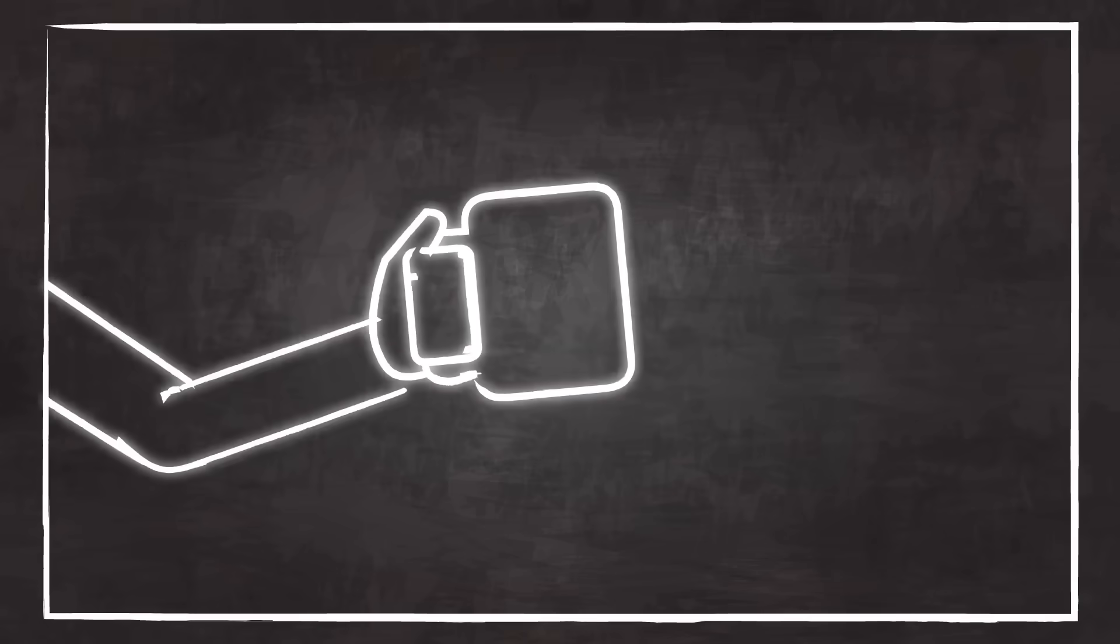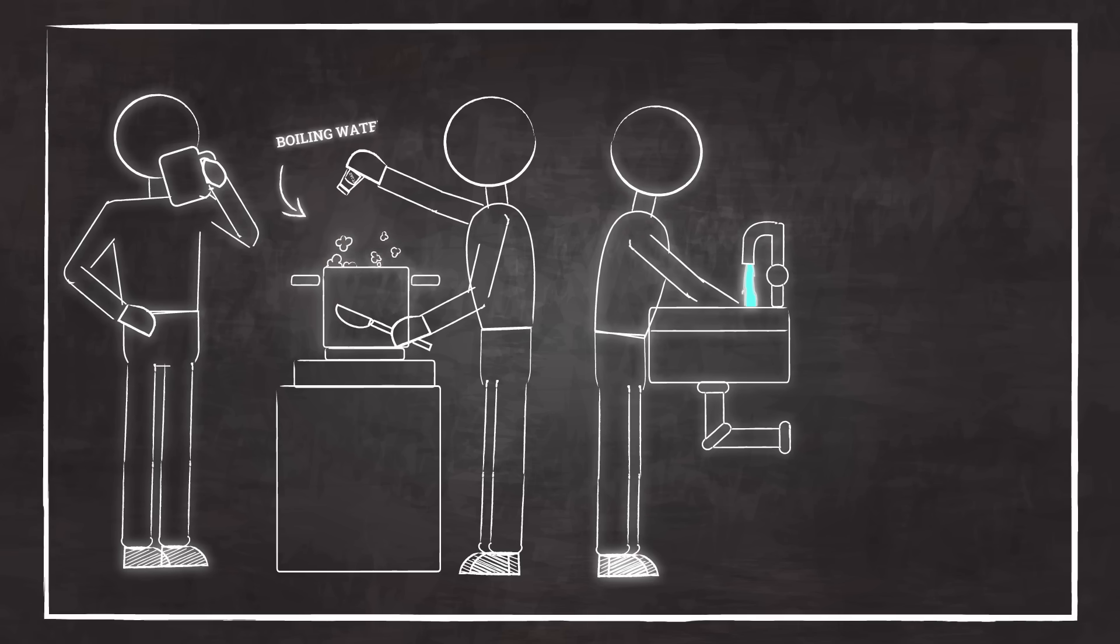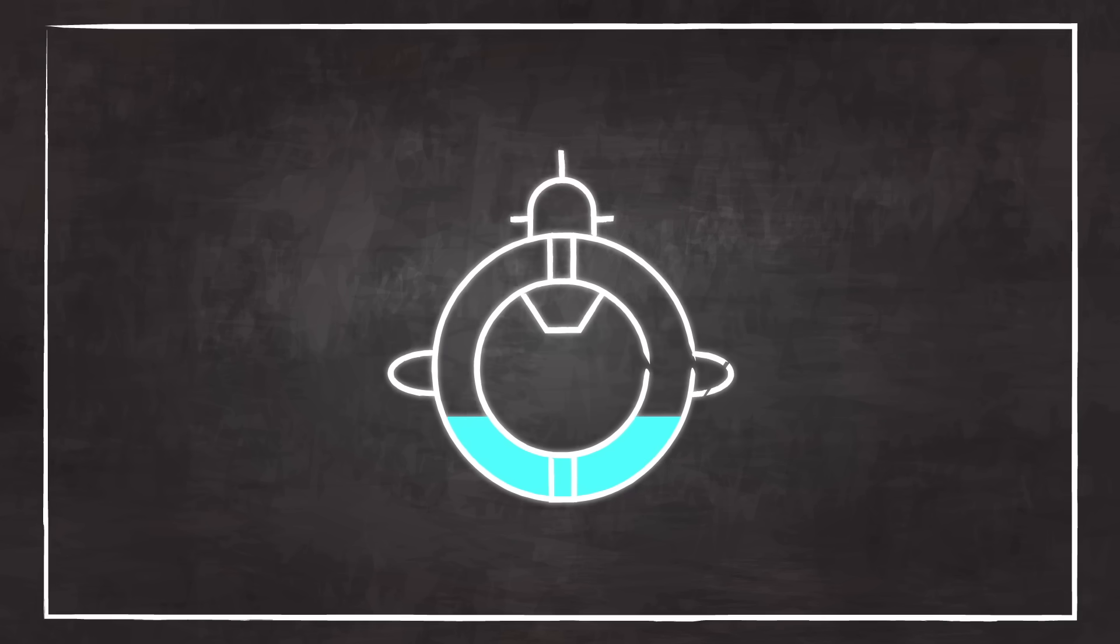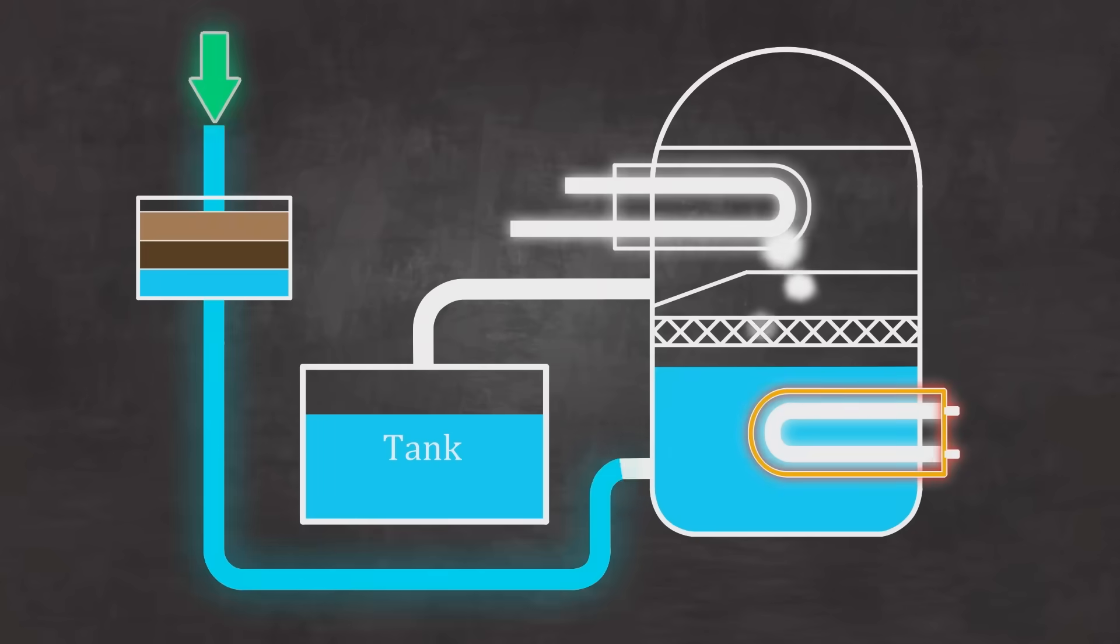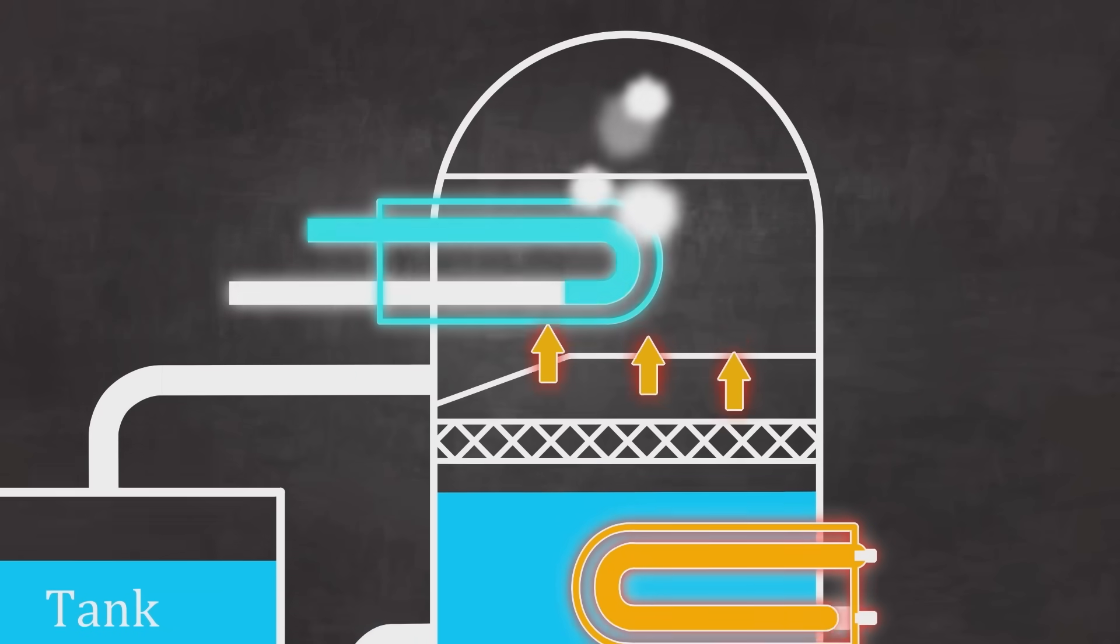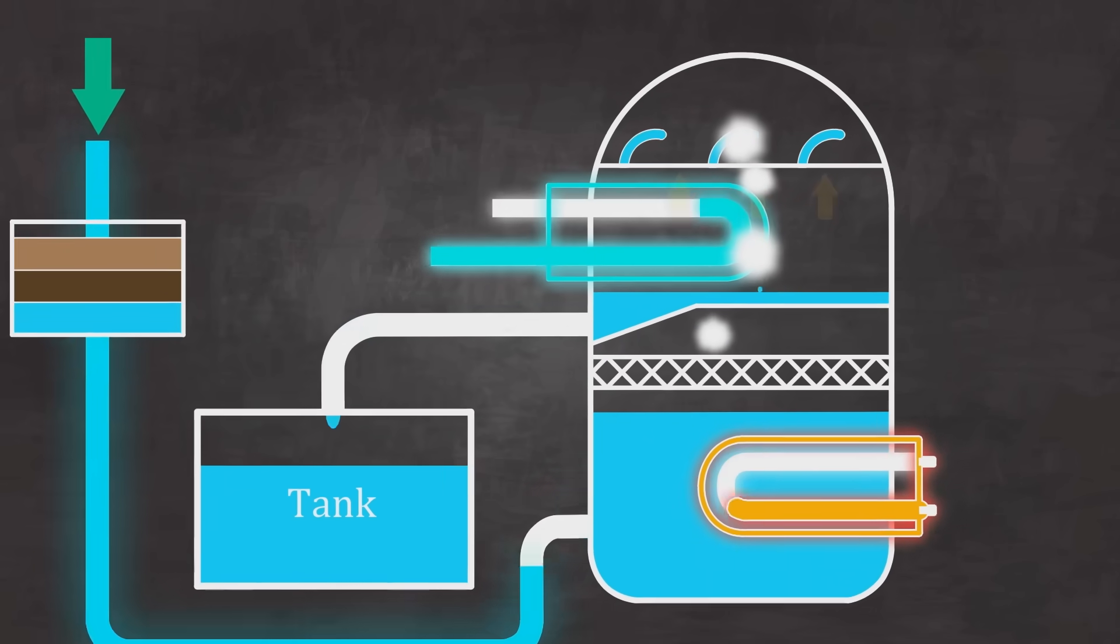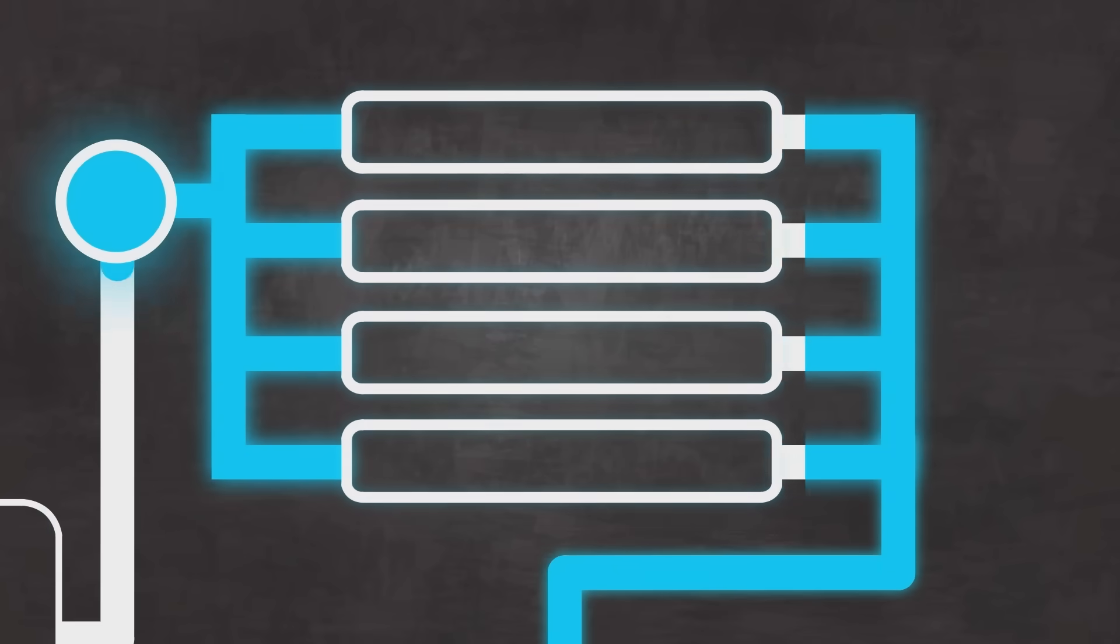A typical submarine crew uses tons of fresh water every day, for drinking, cooking, cleaning, and cooling. Carrying that much is impossible. Once again, the submarine collects seawater, this time to be converted into fresh water. Onboard distillation plants heat the seawater until it turns to steam, separating out salt and impurities again. The vapour is condensed back into liquid and stored as drinkable water. Some modern subs also use reverse osmosis, forcing seawater through high-pressure membranes that filter out salt on a molecular level.